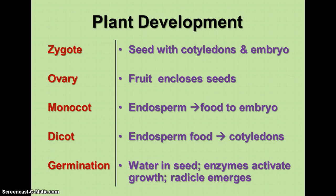Germination occurs because water gets into the seed. When that happens, enzymes become present in the seed and activate growth. The radicle, which is the first root, emerges — and that's the beginning of the germination process.